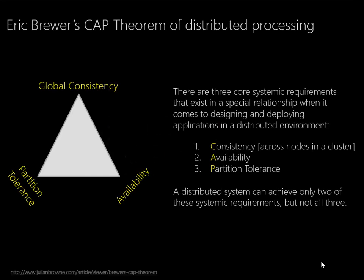As we start to look at how Hadoop actually works, it's really important to understand why it works that way. A good explanation of that can be found in Eric Brewer's CAP theorem. This is a theorem of distributed processing that was introduced around year 2000. The CAP theorem looks at the core requirements of a distributed processing system, and it suggests that of these three core requirements, only two of them can be optimized at once, while the third has to be relaxed or abandoned.